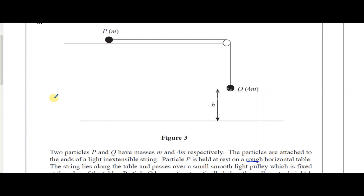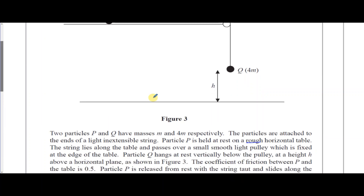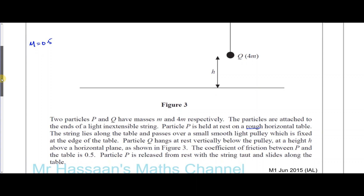The string lies along the table and passes over a small smooth light pulley, which is fixed at the edge of the table. Particle Q hangs at rest vertically below the pulley, at a height h above a horizontal plane, as shown in Figure 3. The coefficient of friction between P and the table is 0.5, and the particle P is released from rest with the string taut and slides along the table.